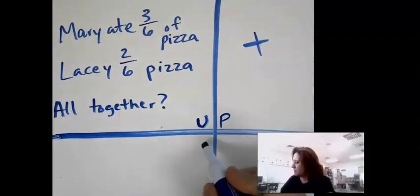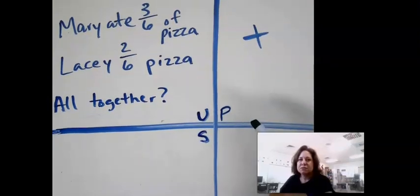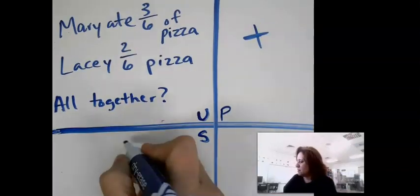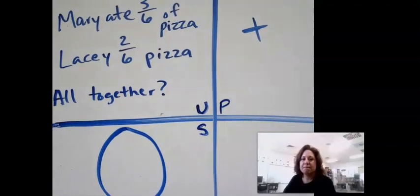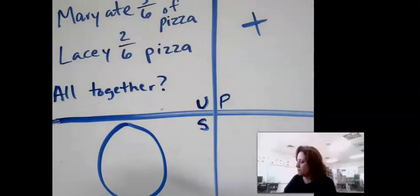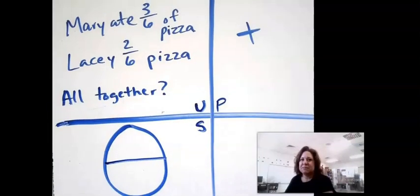Good. All right, so let's go ahead and solve. We can draw a picture. If you would draw a circle in your journal or on your dry erase board and divide it into six pieces.